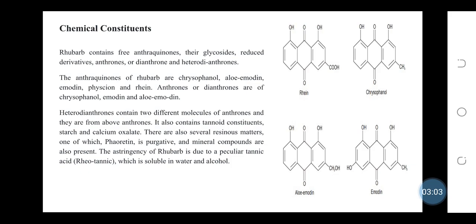Rhubarb also contains steroidal constituents, starch, and calcium oxalate. There are also several resinous matters, one of which, phaeoretin, is purgative, and mineral compounds are also present. The astringency of rhubarb is due to a peculiar tannic acid, rheotannic acid, which is soluble in water and alcohol.